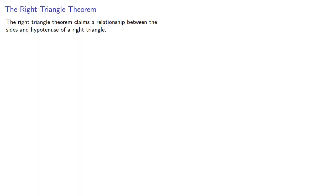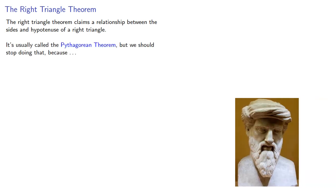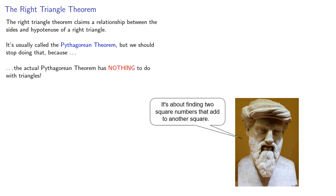The right triangle theorem claims a relationship between the sides and hypotenuse of a right triangle. It's usually called the Pythagorean theorem, but we should stop doing that because the actual Pythagorean theorem has nothing to do with triangles.